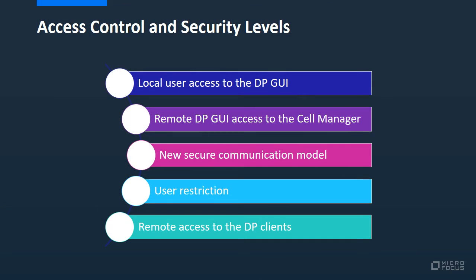This instructor-led course will provide an overview of access control and security levels in Data Protector. By default, the only user able to use the DP GUI and CLI is the user who installed the product. All other users need to be configured into DP groups that own certain privileges to perform designated operations in DP.